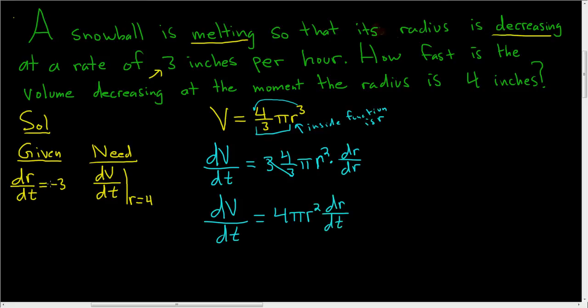We know dr/dt is negative 3. So this is 4 pi r squared times negative 3. Negative 3 times 4 is negative 12, so negative 12 pi r squared. So dV/dt, the rate of change of the volume with respect to time, equals negative 12 pi r squared.